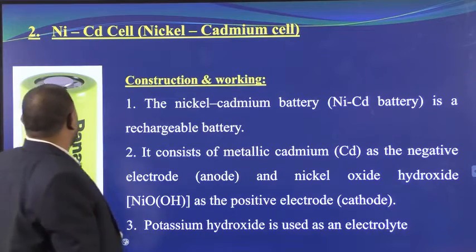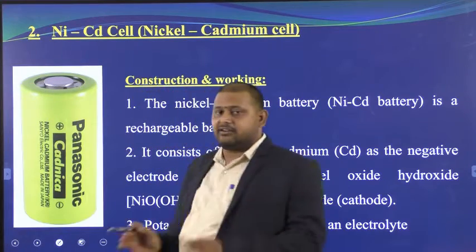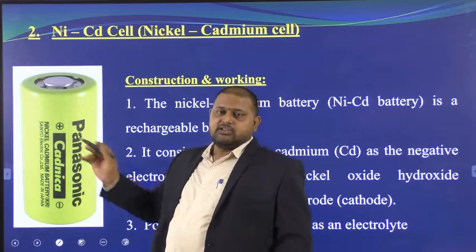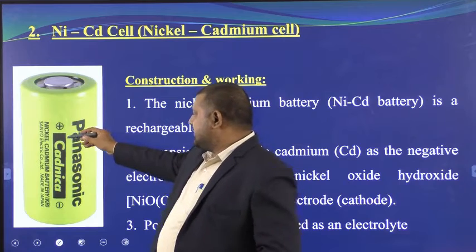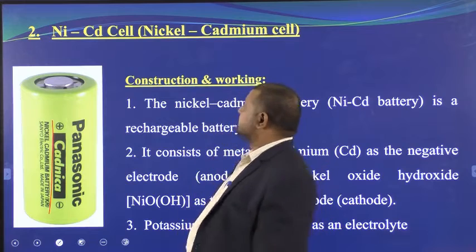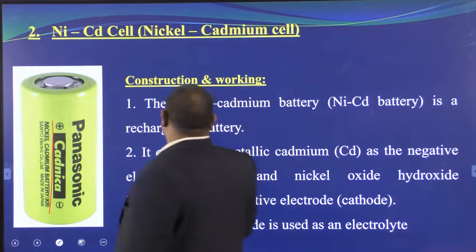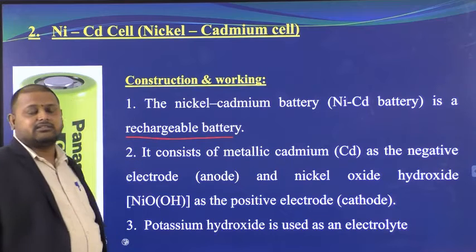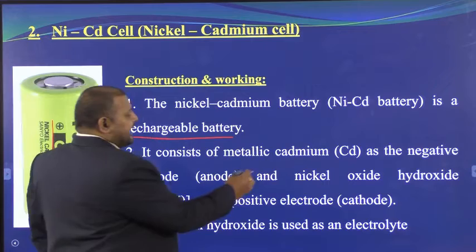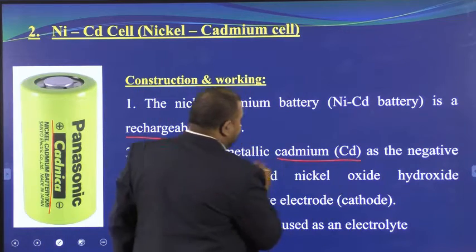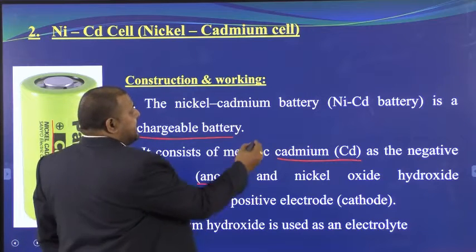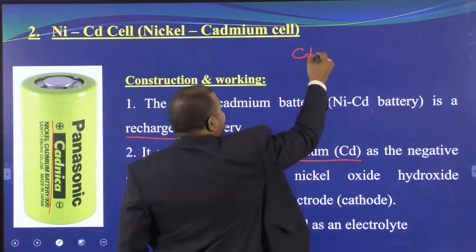The nickel cadmium battery is not like a container — it is completely tightly packed in polypropylene plastic. This is the nickel cadmium battery, as you can see here. It is a rechargeable battery. It contains a cadmium rod; metallic cadmium is the negative electrode, i.e., the anode. So cadmium is the anode.